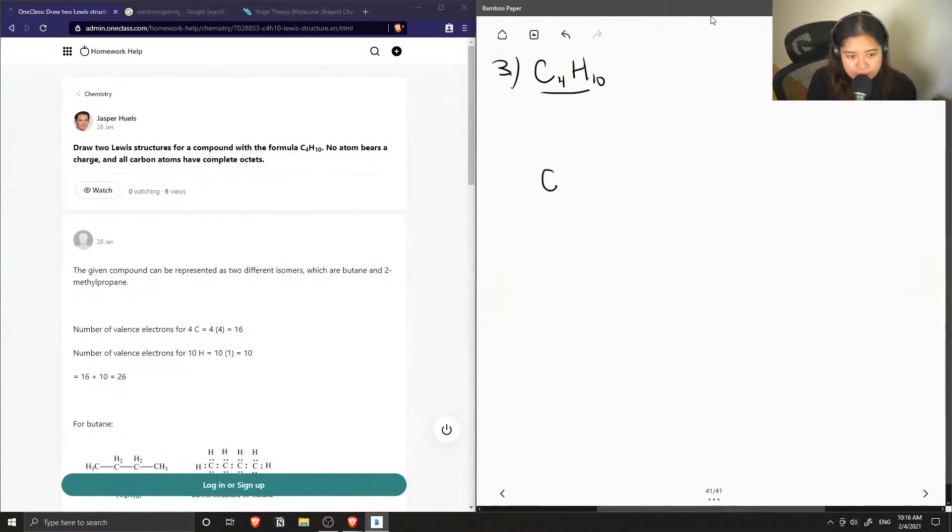We could have all our carbons just in a line like this, and let's see what happens if we draw out all of our hydrogens without forming any double bonds or triple bonds. Then we'll count to see how many hydrogens there are. We have 8 plus 2, which is 10. So this is one of the structures that can have this formula, and it is called butane.